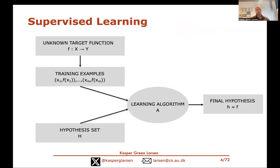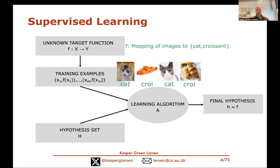These are the basic ingredients in the supervised learning setup: the unknown target function, the training data of labeled examples, a learning algorithm, and a hypothesis set H. The learning algorithm searches through H to find a hypothesis that agrees with the unknown target function on the training data as often as possible — we want h(x_i) to equal f(x_i) as often as possible.